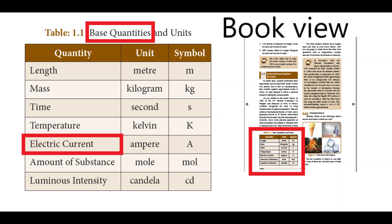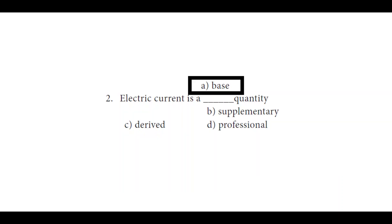We can see Table 1.1, which mentions base quantities and units — not derived quantities. It is clearly mentioned as base quantities. In the fifth row, electric current is listed as a base quantity with its unit mentioned in the table. So electric current is a base quantity, not a derived quantity. That is the answer.